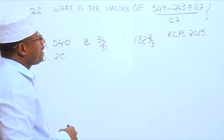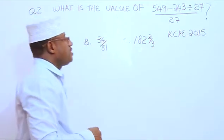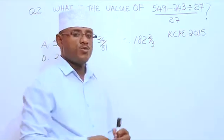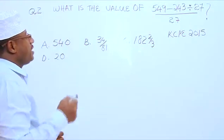What is the value of 549 minus 243 divided by 27 over 27? Now, when we start, we are going to use BODMAS.